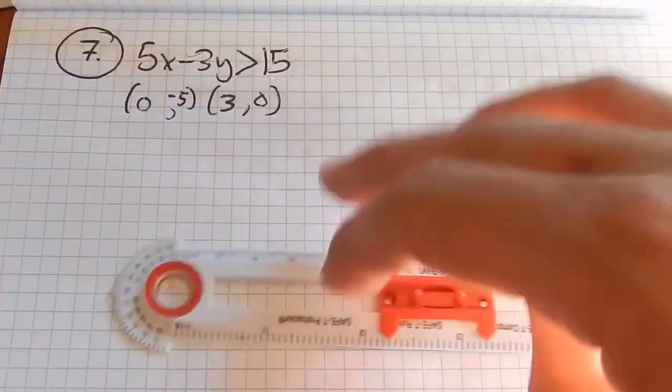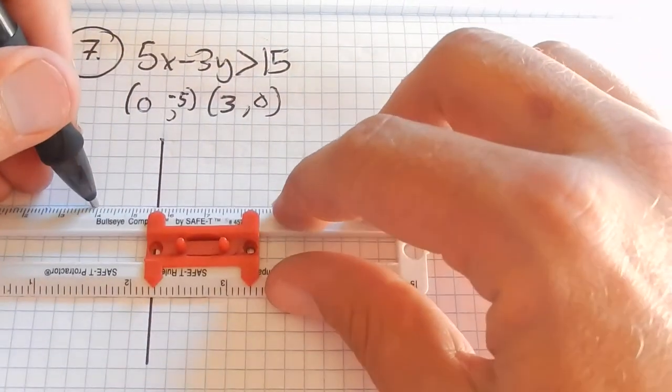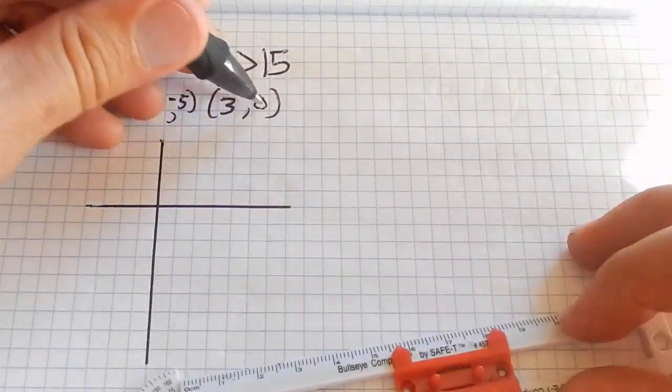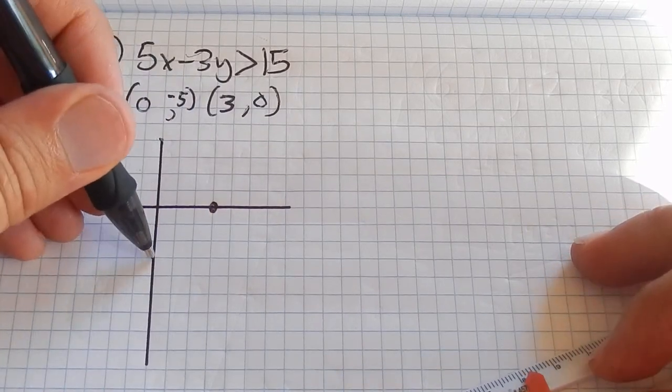Great. So I have two points I can graph: (3, 0) and (0, negative 5). And 3, 0 is 1, 2, here. 0, negative 5 is here: 1, 2, 3, 4, 5.